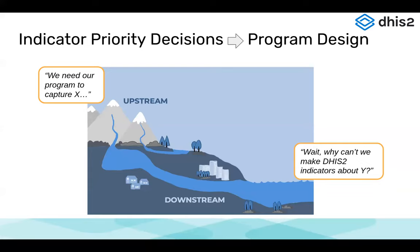Then downstream, twelve months down the line, you might be saying it would be really interesting to know what is the delay between when the request is made for a lab from the facility level and when the lab result is actually returned and reported. But then you realize you can't actually do that because these are two repeatable stages and you haven't thought of a way to link the laboratory event to the clinical event. So then you have to do fancy workarounds with SQL views or API queries to get these data, which might have been very simple to collect in the first place had you thought about this requirement initially.